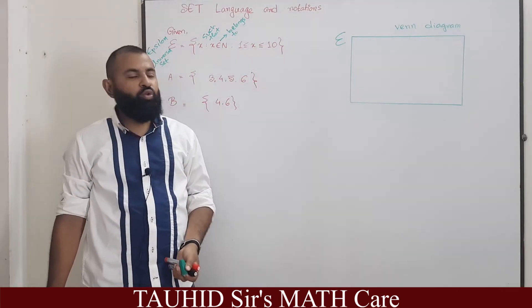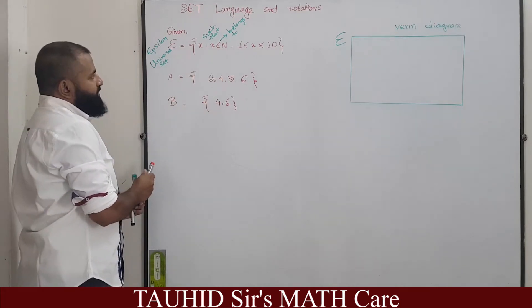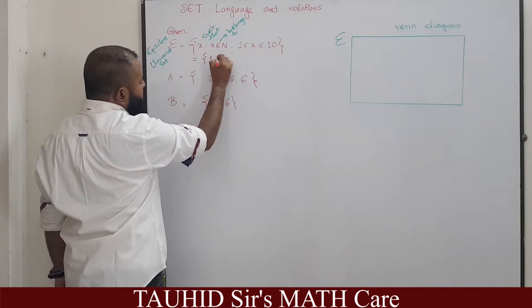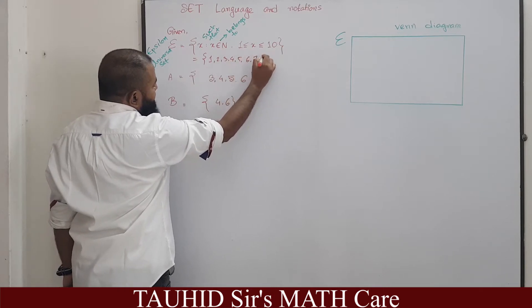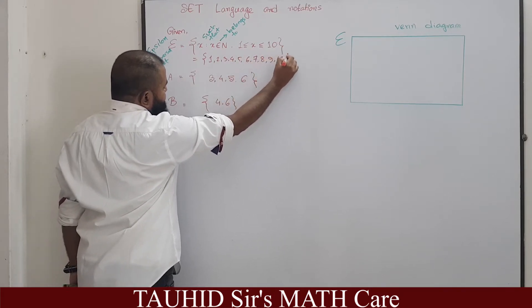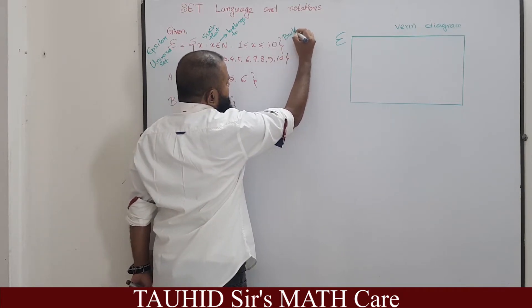And what is said here about x? X lies between 1 and 10 inclusive, that means if we write this set as a list it can be written as 1, 2, 3, 4, 5, 6, 7, 8, 9, 10.